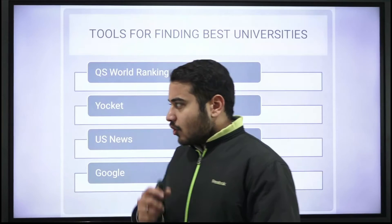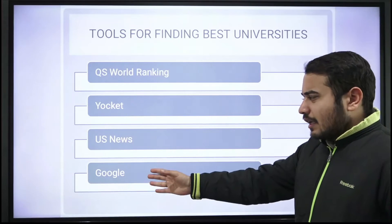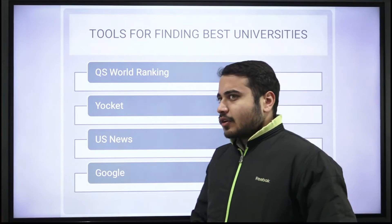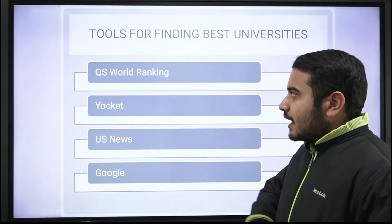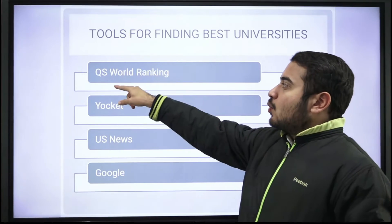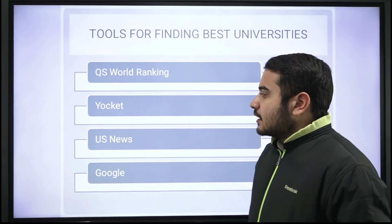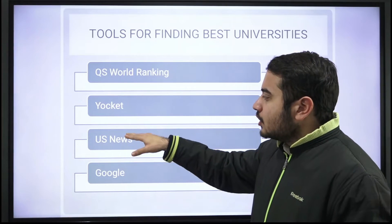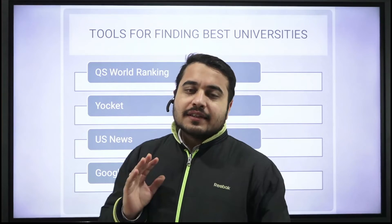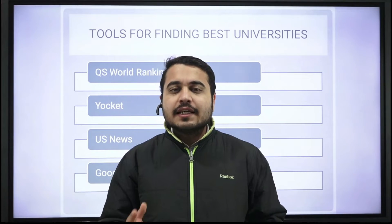In this video, I'm going to tell you about those tools in detail. There are three or four tools — Google is the most common platform for everything, but more specific tools are QS World University Rankings dot com, Yocket, and US News dot com. These are three websites you can use.